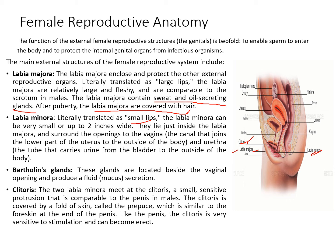The next structure is the Bartholin gland. The function of the Bartholin gland is to produce fluid or mucous secretion, and it is located beside the vaginal opening. The clitoris: the two labia minora meet at the clitoris, a small sensitive protrusion that is comparable to the penis of the male. The clitoris is covered by a fold of skin called the prepuce, which is similar to the foreskin at the end of the penis. Like the penis, the clitoris is very sensitive to stimulation and can become erect.